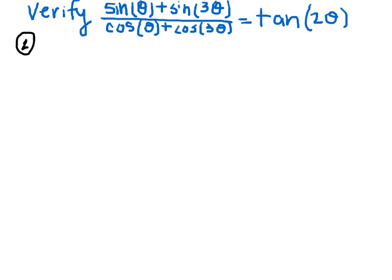So in the numerator, the sine plus sine is going to equal 2 sine of theta plus 3 theta, divided by 2, times cosine of theta minus 3 theta,